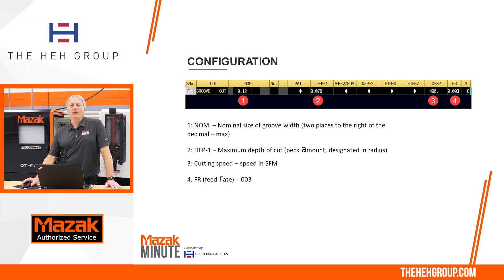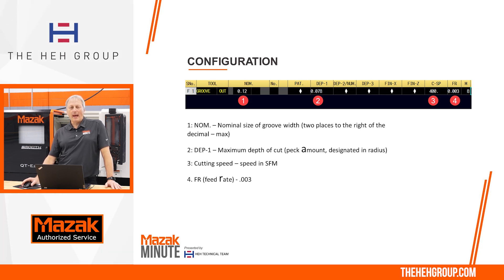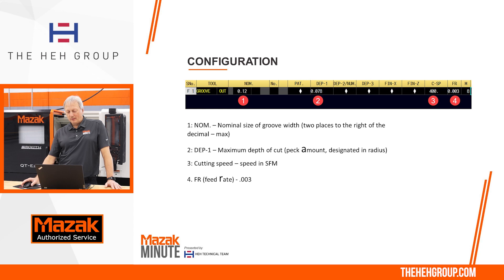In our sequence data where we have the tooling information, you can see I have the groove out tool. The nominal size, 0.12, is going to be the width of the tool. The depth of cut is going to be the maximum depth that you want to take. If I have a value in there, that's going to be for pecking — so every 78 thousandths it's going to feed down, come back up slightly to relieve the pressure, and come back down another 78. If you put a zero in there, there will be no peck — it will feed straight down to my finish point in X.